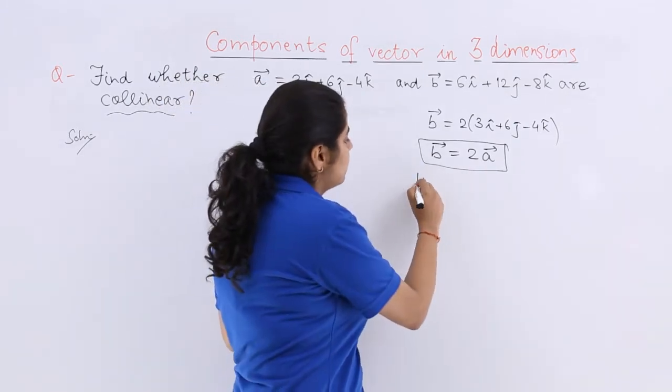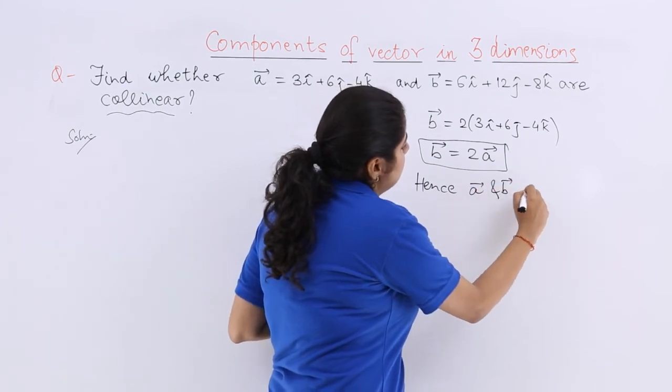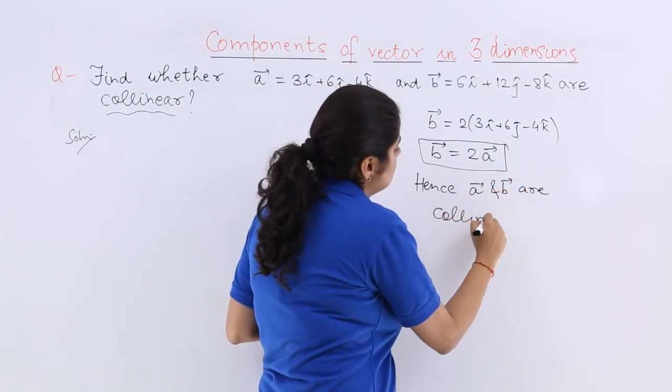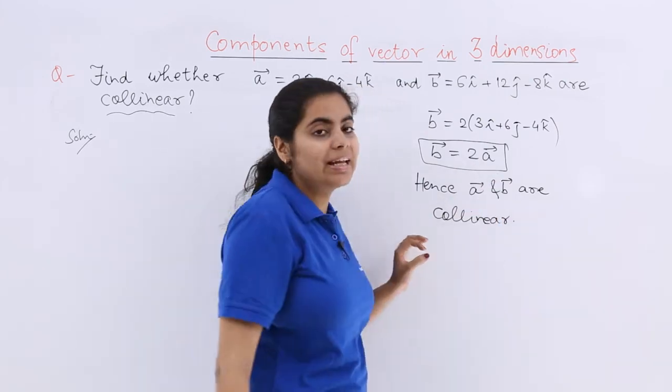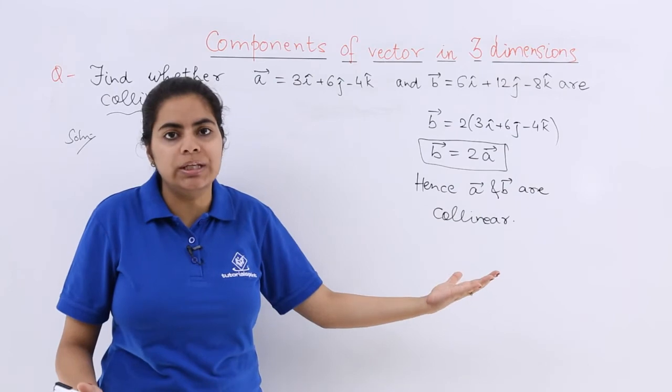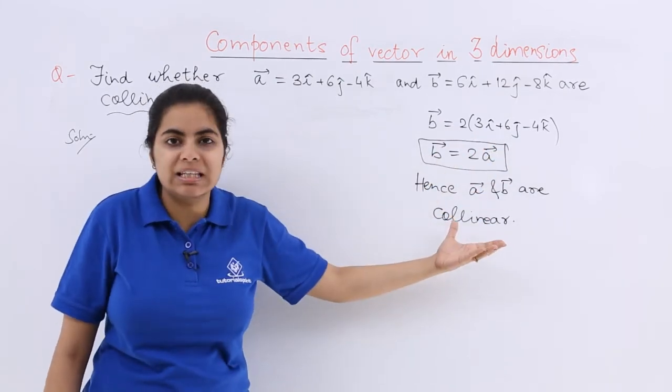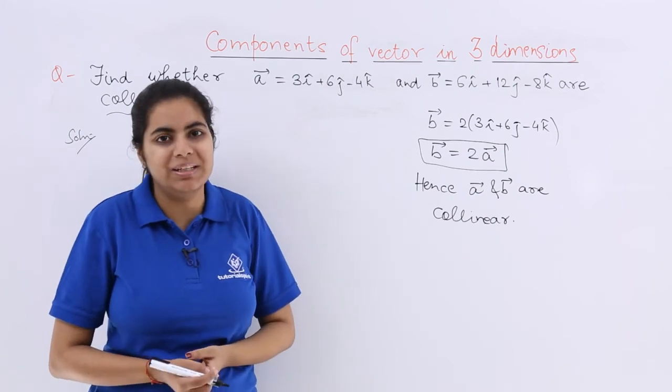So I write hence, a⃗ vector and b⃗ vector are collinear. So this is how you check collinearity. In some cases, the answer may be that a⃗ and b⃗ are not collinear. If you have no common vector coming out, if you cannot express them directly, they will not be collinear.